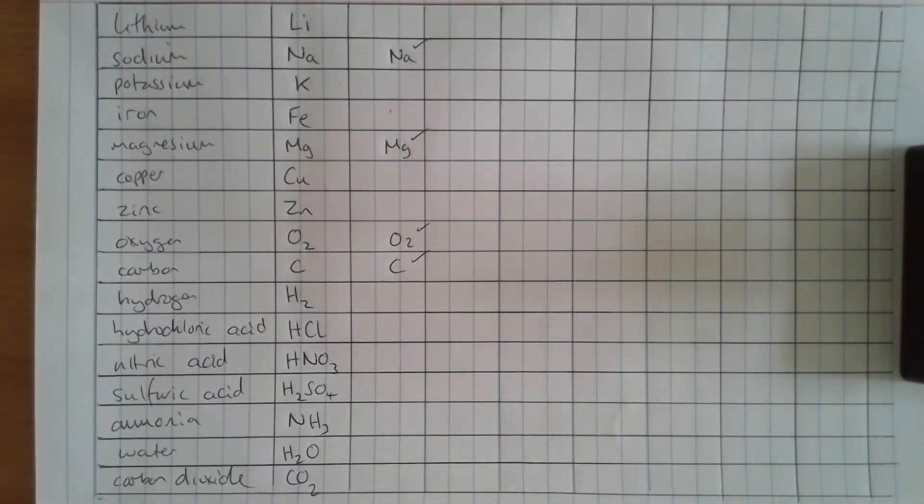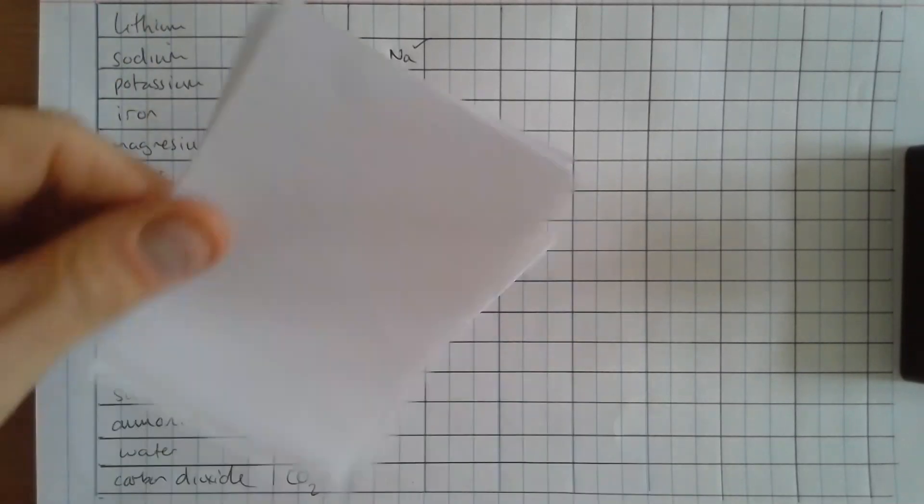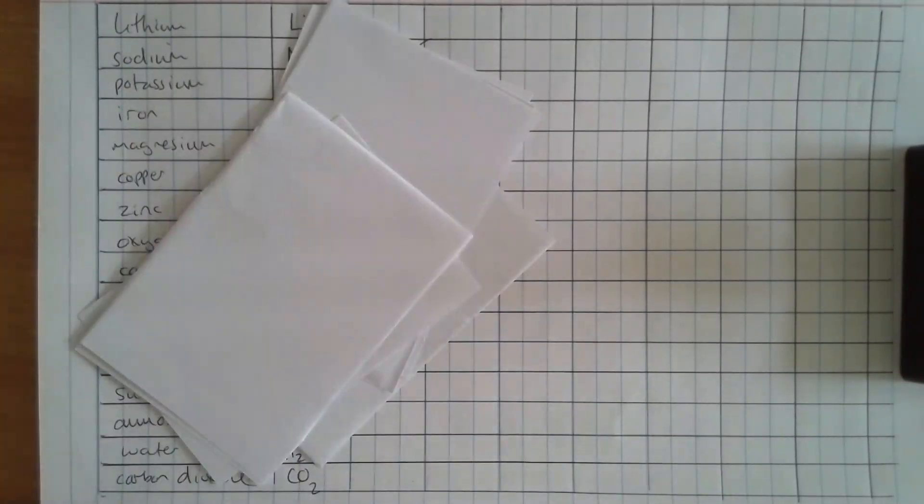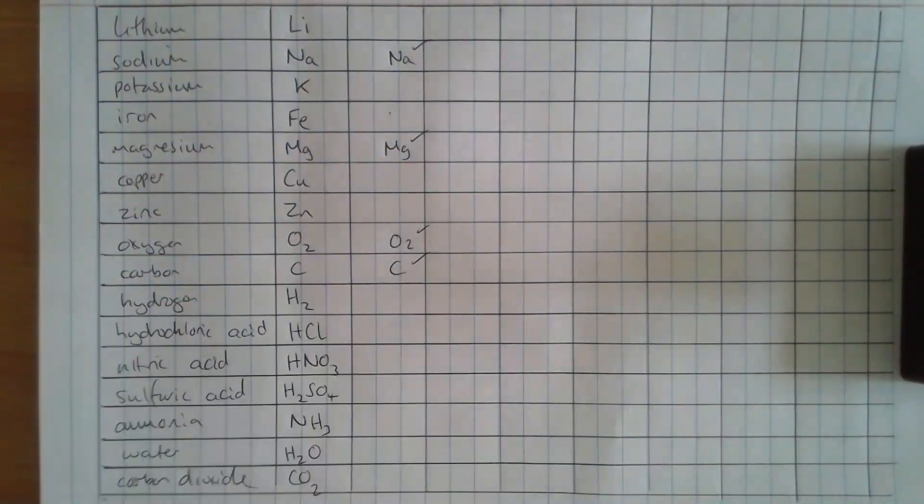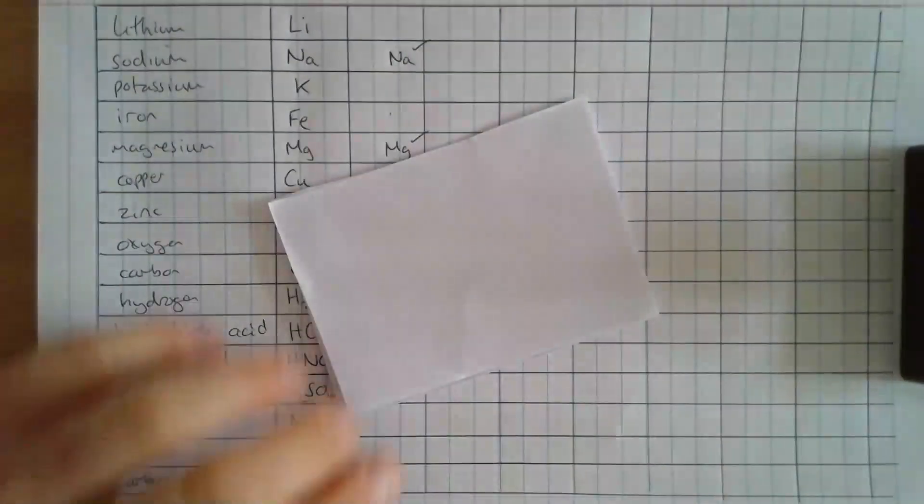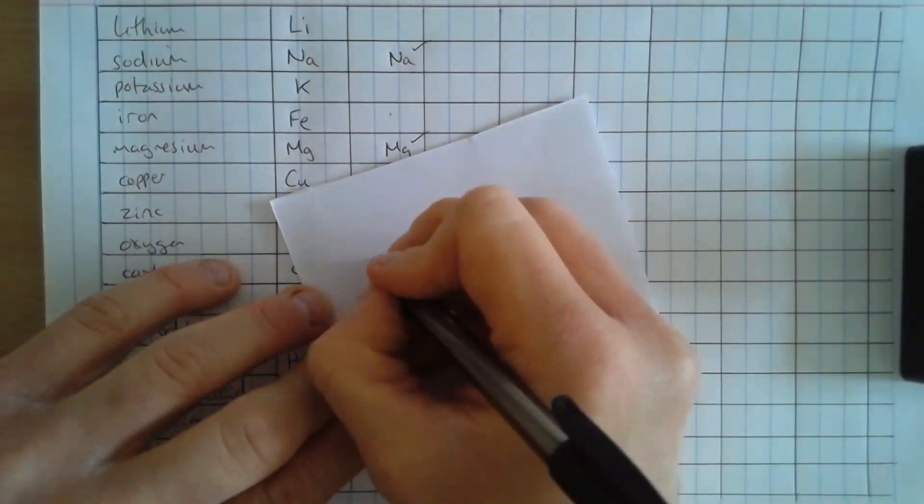The other option is to make some flashcards. And what I did here was just fold a piece of paper into eight and then cut along the folds that I'd made. So obviously there's 16 here, so you need to do that twice.